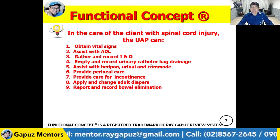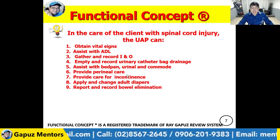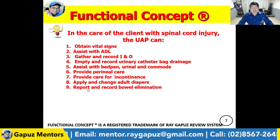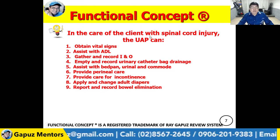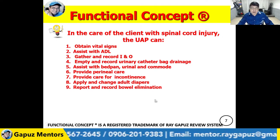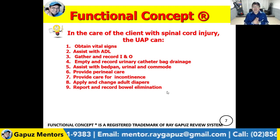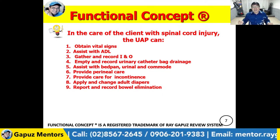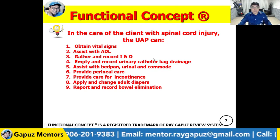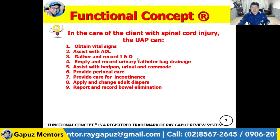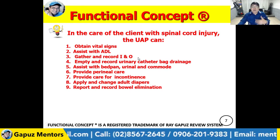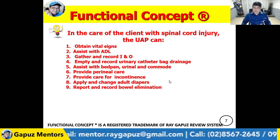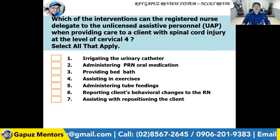The UAP can empty and record urinary catheter bag drainage, assist with bedpan, urinal, and commode, provide perineal care, provide care for incontinence including applying and changing adult diapers, and report and record bowel elimination patterns. The UAP reports to the RN — not directly to the physician. The RN validates the gathered data. There is a distinction between data gathering and assessment: routinely recording urine output is data gathering, but noting the urine is reddish or low is interpreting data, which is assessment — the RN's role.